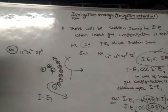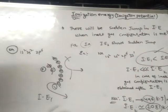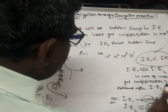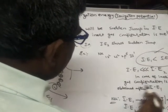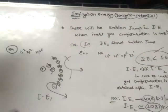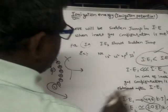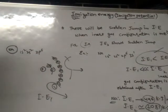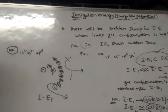So the second ionization energy is very, very large compared to the first ionization energy, because in this case the inert gas configuration is obtained after the first ionization energy. After removal of the first electron, the atom gets the inert gas configuration, and therefore it requires much more energy.